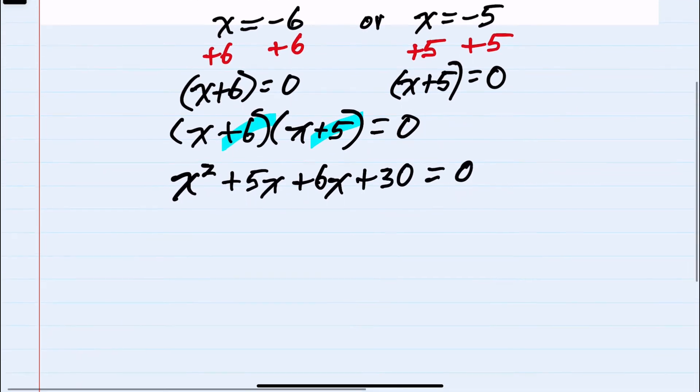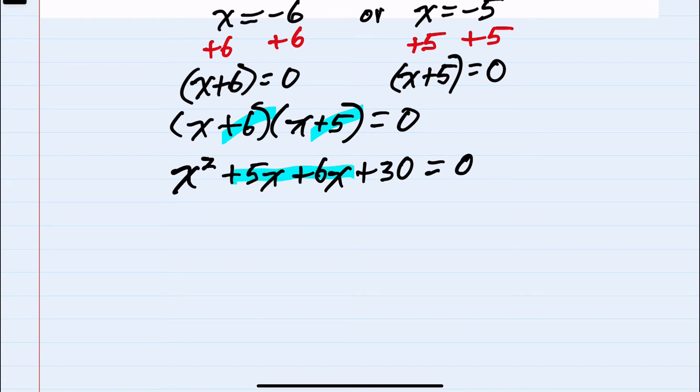From here, combining like terms, the middle terms are like so we can combine those. We have x squared plus 11x plus 30 equals 0.